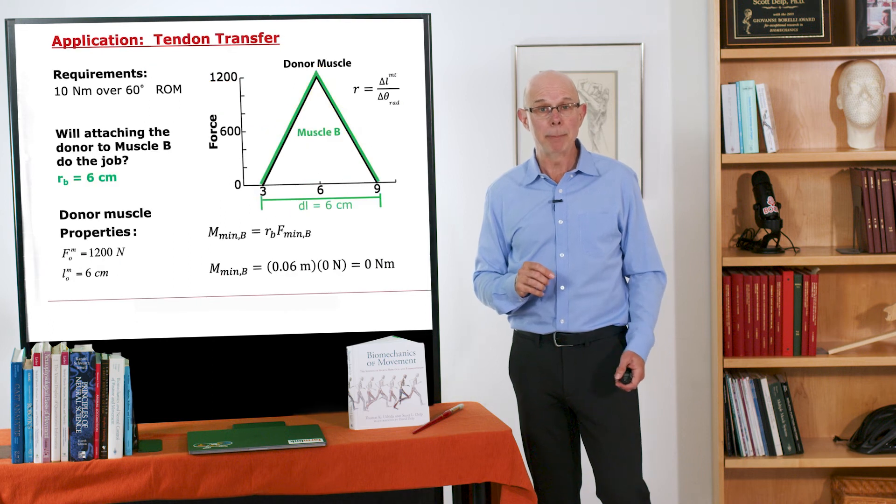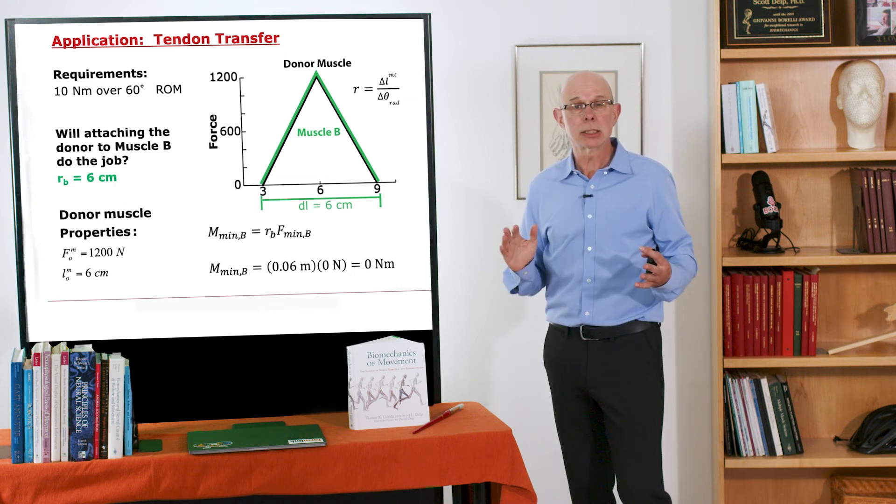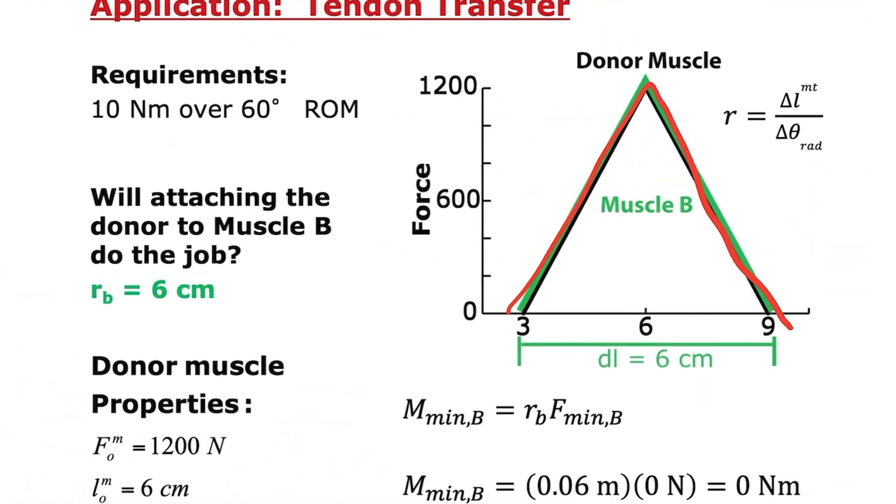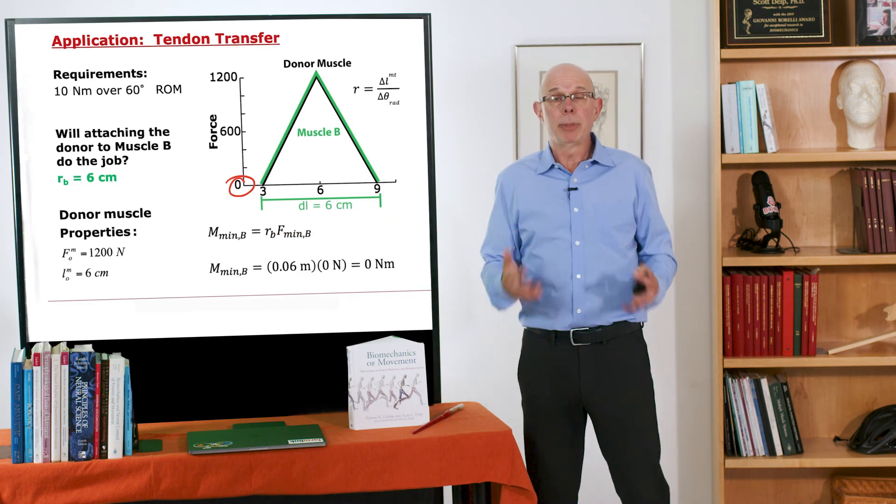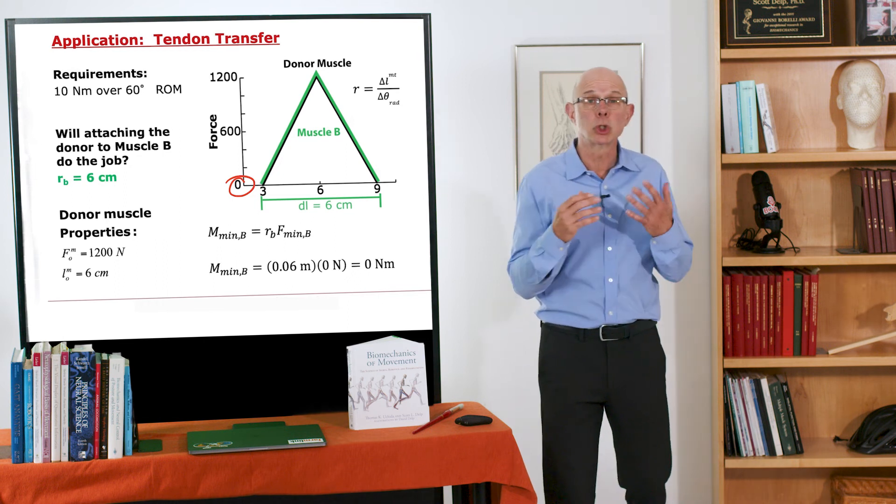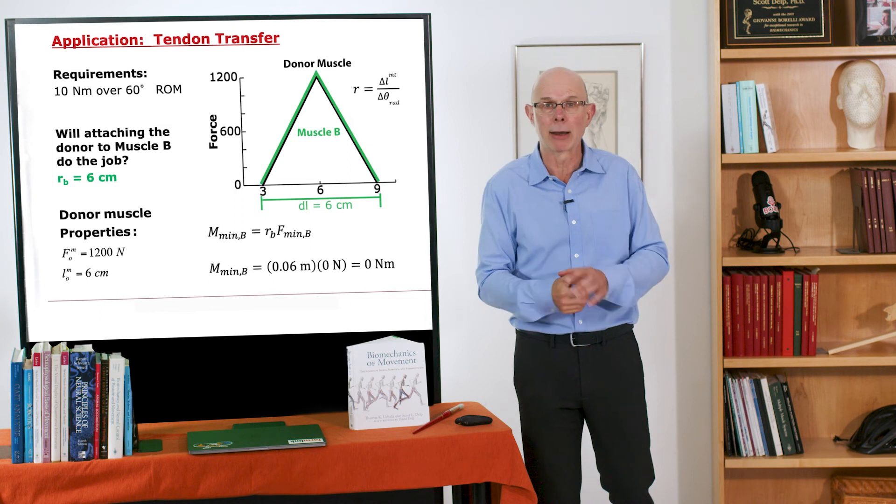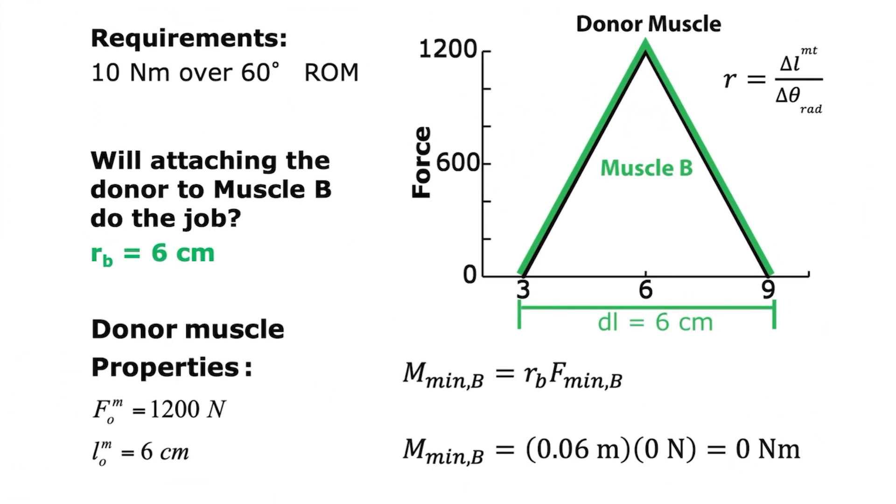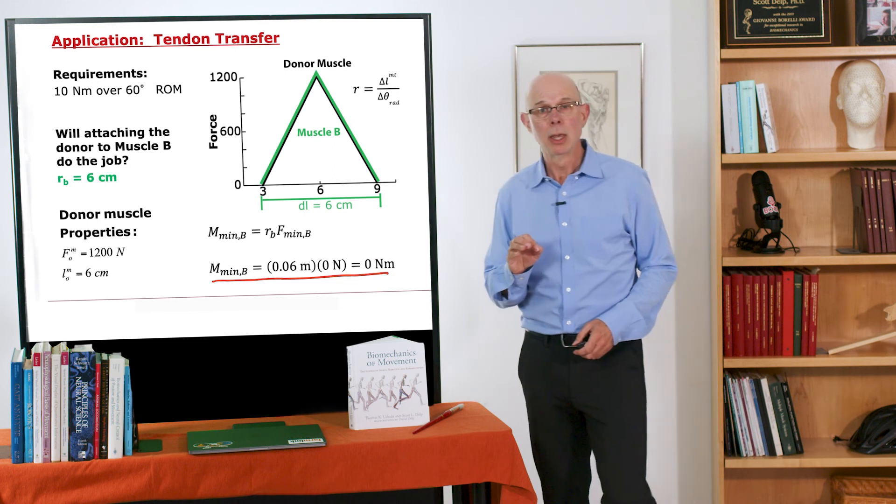Let's try the other site. Remember we were going to get a big moment there. So if we attach where the muscle has the large moment arm, the 6 centimeter moment arm, over that 60 degree range of motion, we are going to traverse this whole force length curve. So there's going to be certain parts of the range of motion where the force is zero. So where that force is zero, you're not going to be able to generate any movement. Because the moment arm is bigger, as I go through the range of motion, the muscle gets shorter and shorter and it gets so short that on the muscle force length curve, it can't generate any force. It's tempting to go for those big moment arms because you'll get a big torque out of the muscle. But the downside is they undergo a greater change in length. And you see in this case, if we attach to this muscle, the minimum moment is zero. This moment of zero is not 10 newton meters. So attaching to muscle B will not do the job.